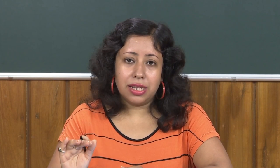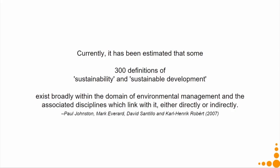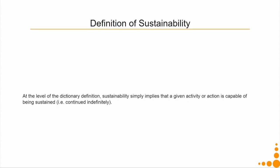It is estimated that currently we have more than 300 definitions of sustainability and sustainable development. These exist in various domains like environmental management, agriculture, biological sciences and so on. The dictionary definition of sustainability says sustainability simply implies that a given activity or action is capable of being sustained, that is continued indefinitely.